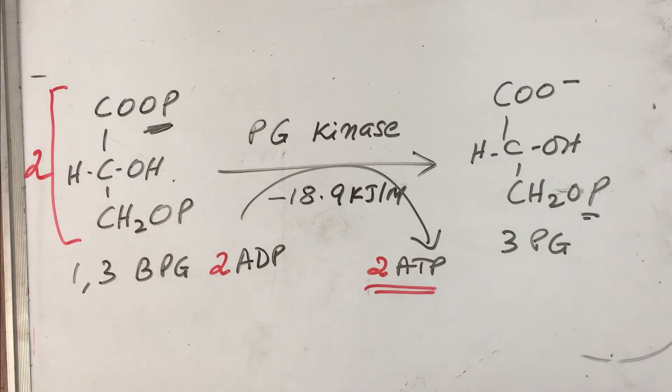The combination of this step and the previous step where we produced 1,3-bisphosphoglycerate is a coupled reaction, and this combined step is called substrate level phosphorylation. It is called substrate level phosphorylation because the substrate participates in an enzyme catalyzed reaction that yields ATP molecules.